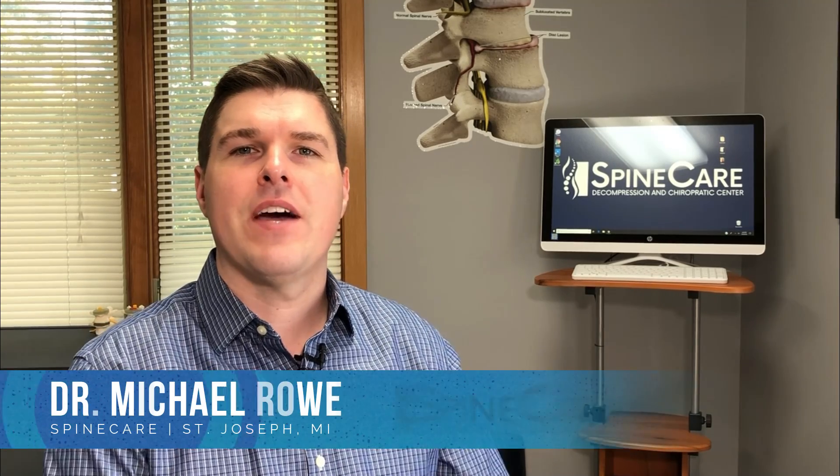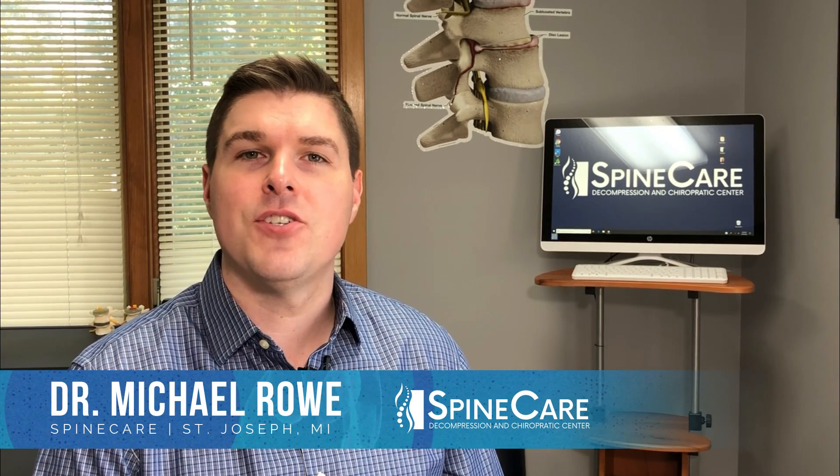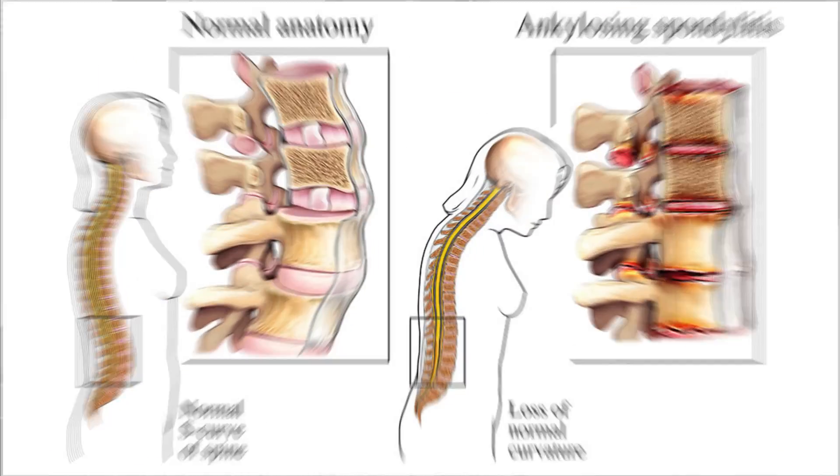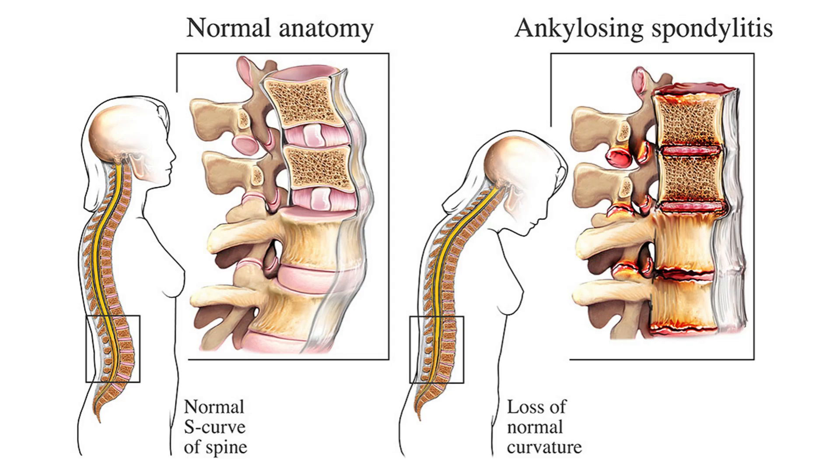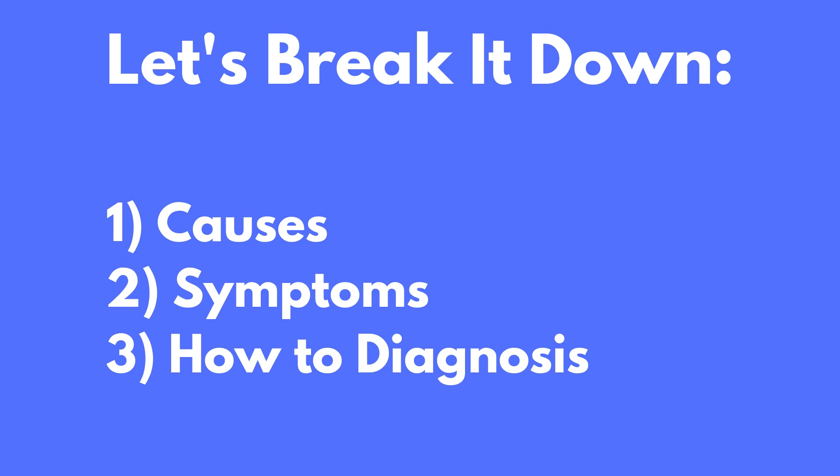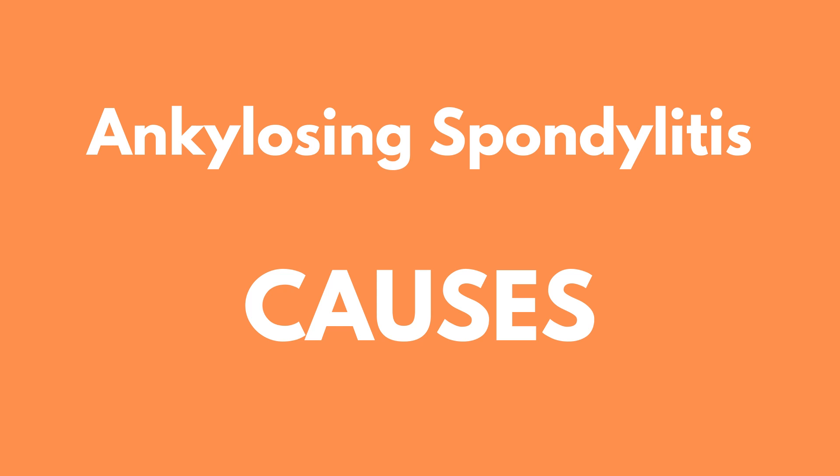In this video, I'm going to answer what is ankylosing spondylitis, its common symptoms, progression, and how it's diagnosed. Hey everyone, Dr. O here at SpineCare in St. Joseph, Michigan. If you're unsure of what ankylosing spondylitis, commonly known as AS, is, it's an autoimmune rheumatic condition that primarily affects the spine as well as other joints throughout the body. I'm going to break it down into three parts: causes, symptoms, and how it's commonly diagnosed.